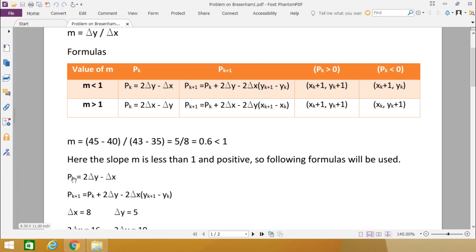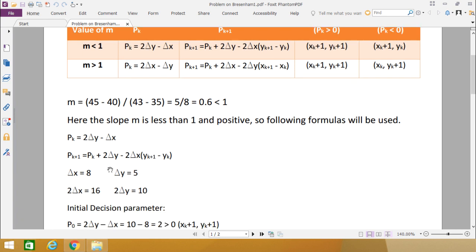Here at first we are calculating pk. pk has to be calculated using 2·delta y - delta x, and pk+1 will be this respective formula. Now what is our delta x? Delta x is 8 and delta y is 5. We are calculating 2·delta x, that is 16, and 2·delta y, that is 10.